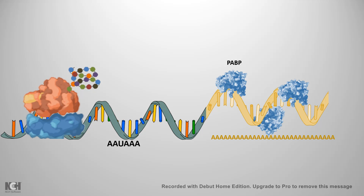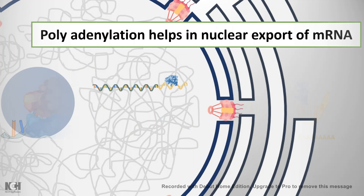Polyadenylation also helps in nuclear export of the mRNA. For the mRNA to be translated, it has to be exported out of the nucleus to the endoplasmic reticulum where the ribosomes are, which leads to the translation reaction. The poly-A tail turns out to be very useful in this process because it interacts with the exporting proteins, making it easy to export.